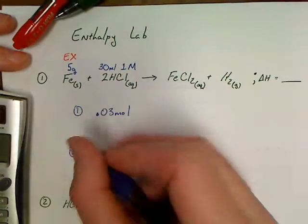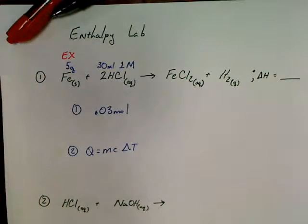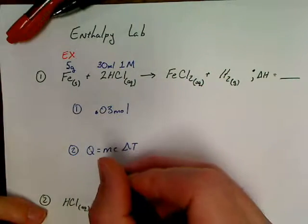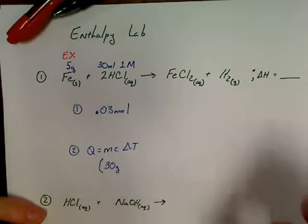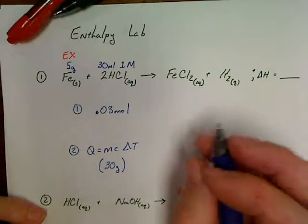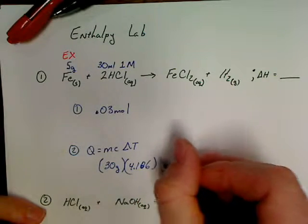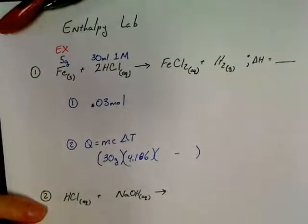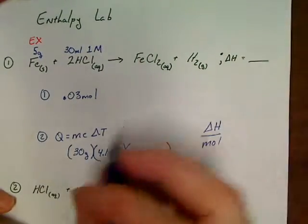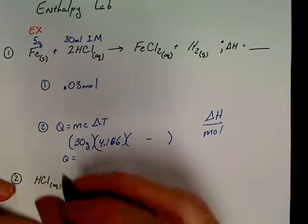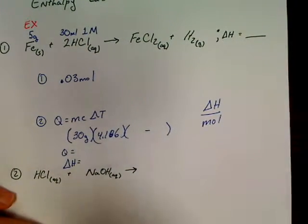For step number two, you're going to do Q equals MC delta T on this one. Your mass on the first one, that acid was so weak, we're just going to go ahead and say that you had 30 grams of water times 4.186 times your two temperatures. After you get that, you'll do your delta H over moles. Don't forget, whatever you get for Q, delta H needs to be the opposite on that.